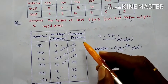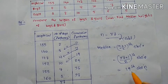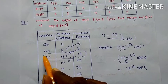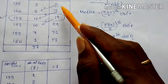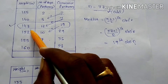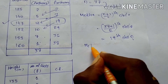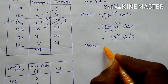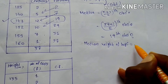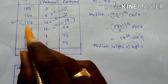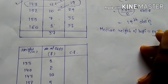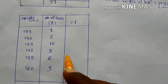Looking at the cumulative frequency table, the 19th observation corresponds to cumulative frequency 19. The 19th observation falls at the height of 147 centimeters. Therefore, the median height of boys is 147 centimeters.